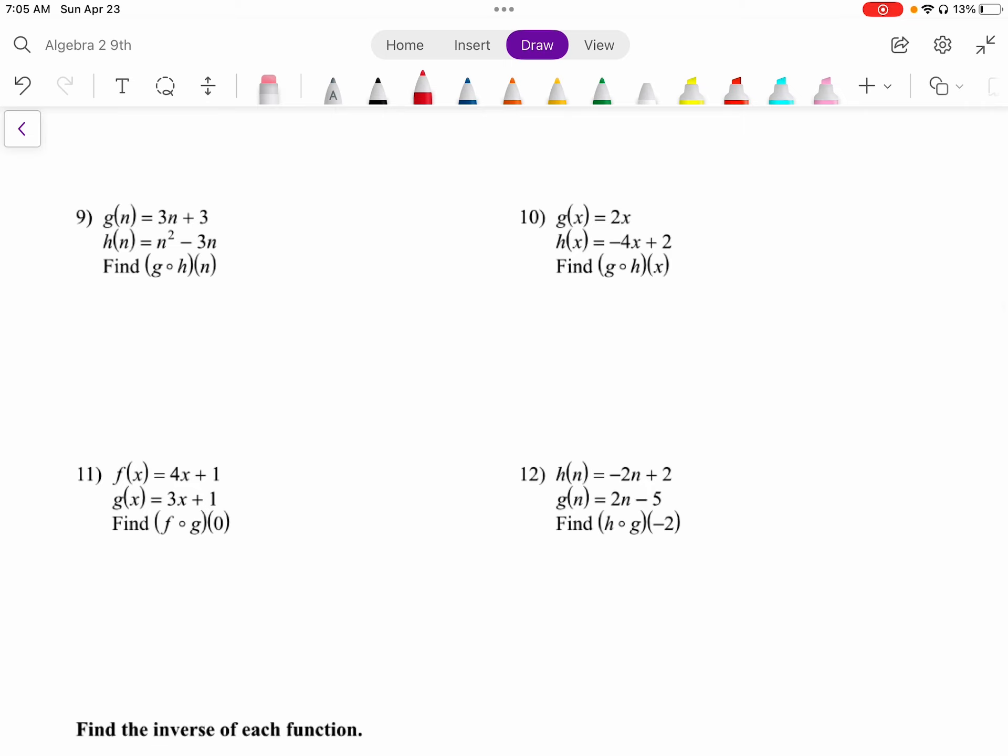Next page, but still operations. This would be our newer operation to us. This says g composed with h of n. What this means is this is g of h of n. You put the h function in for n into the g function. So I like to keep writing this. So this is actually g of, well what's h of n? g of n squared minus 3n.